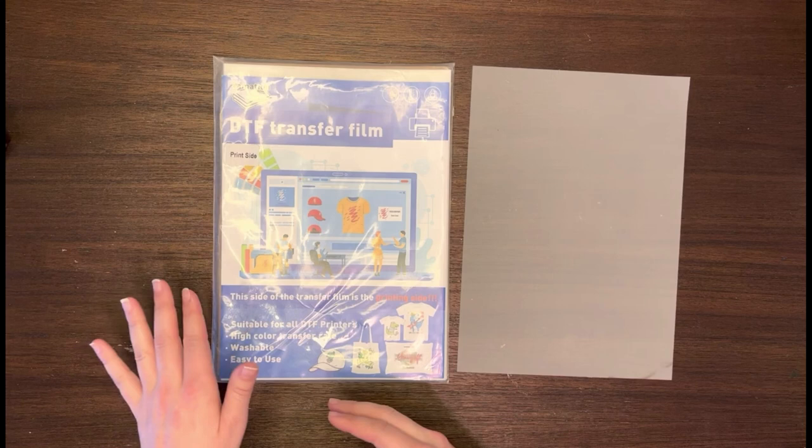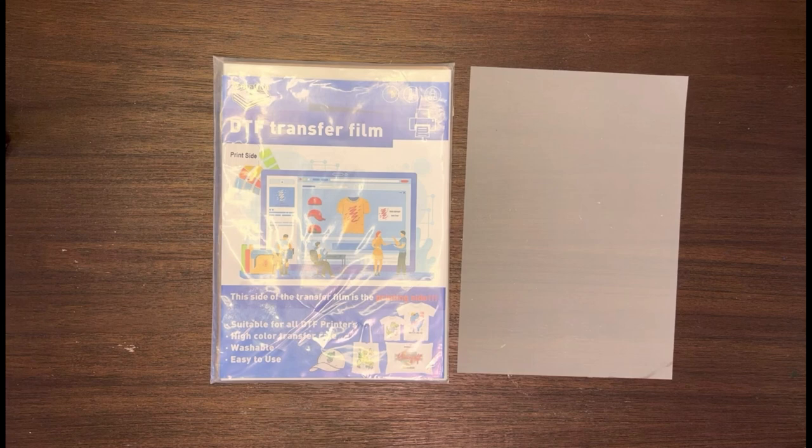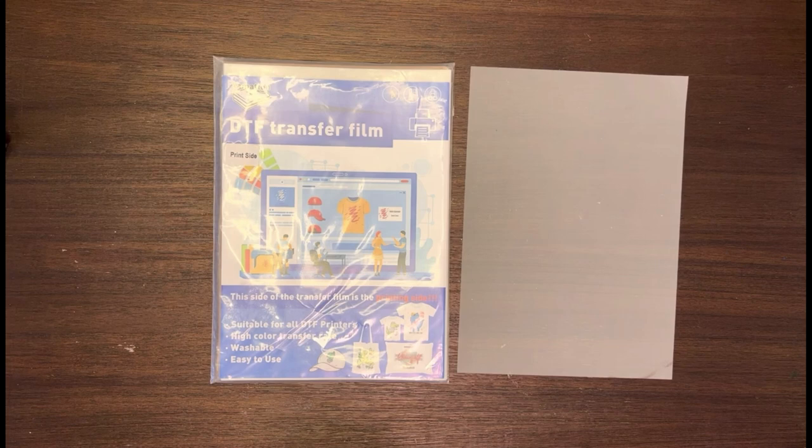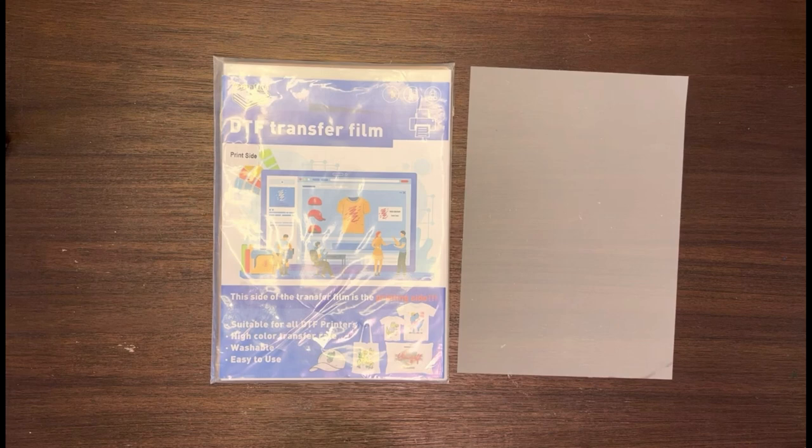There are a few tricks that we can use to get the printers to recognize a regular piece of paper that way it will print with your film so you can print those pretty images and then get them transferred onto your materials. I'll go ahead and show you three different tricks that can get your printer to recognize your film as a piece of paper so that way it'll feed through your printer.